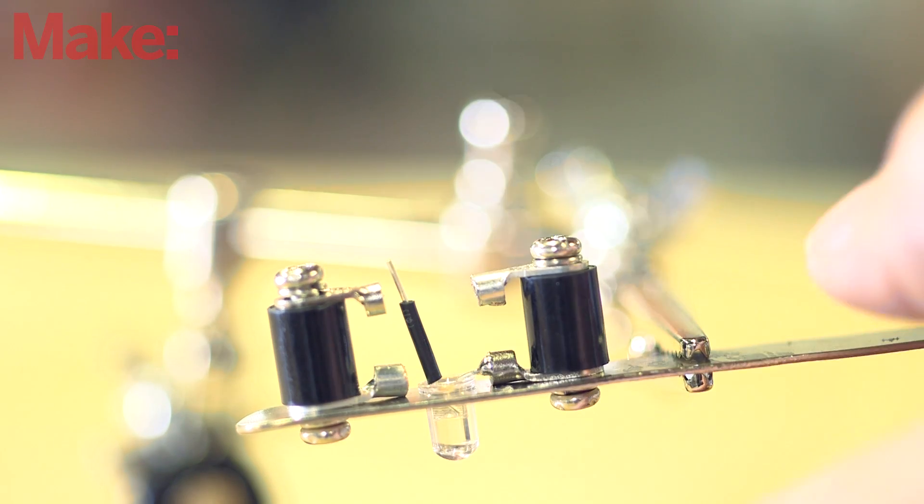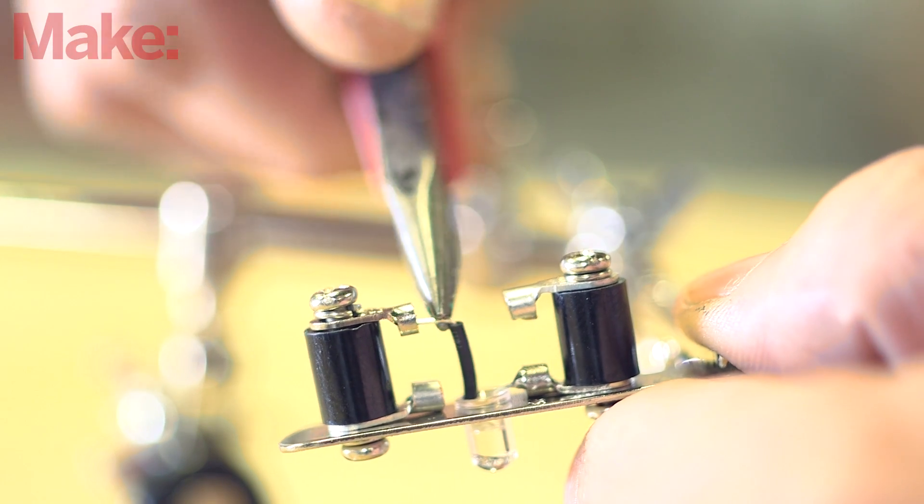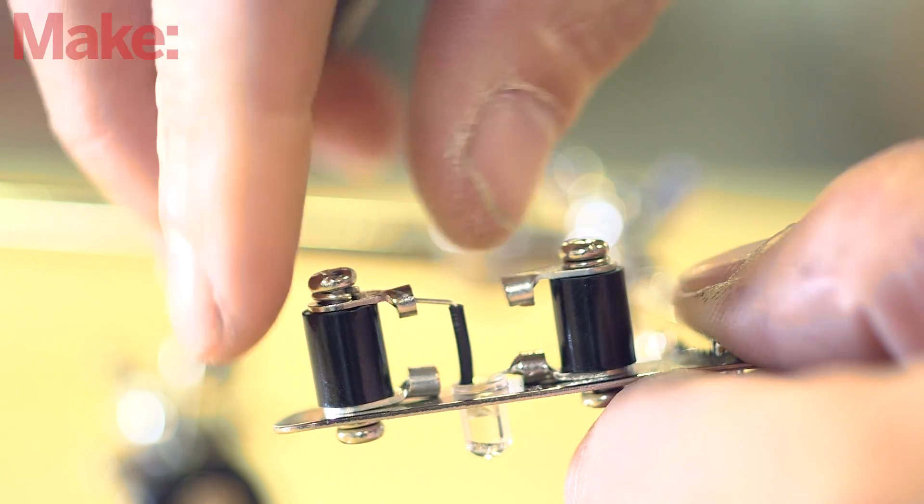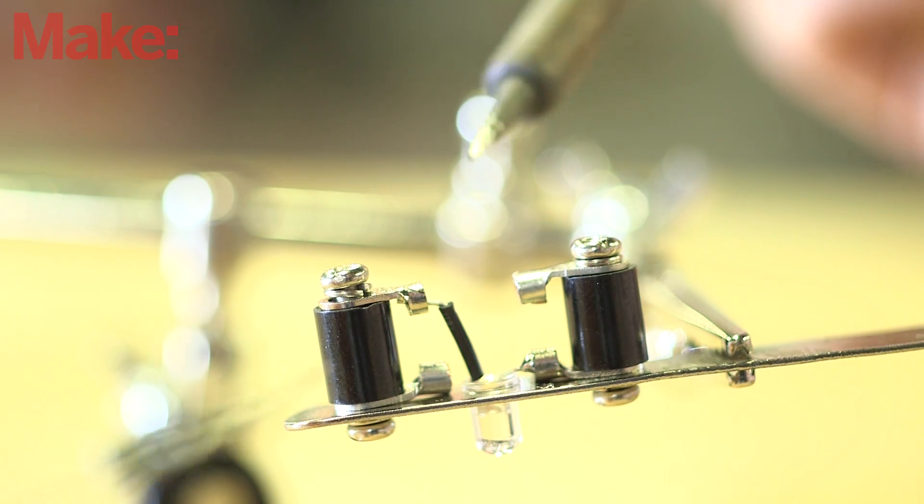Slip a small piece of heat shrink tubing over the remaining LED lead and apply heat to activate it. Bend this lead over and insert it into the ring tongue on the opposite side of the standoffs to the LED in the jaw and solder it in place.